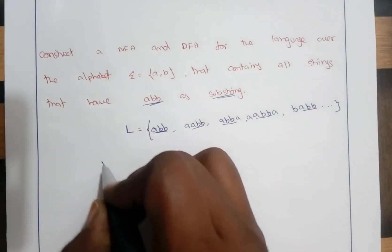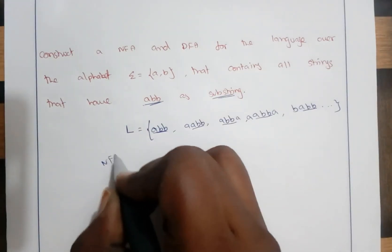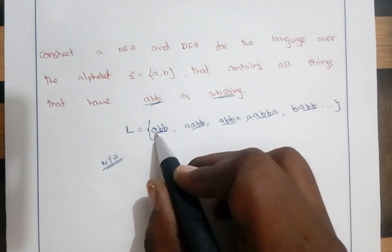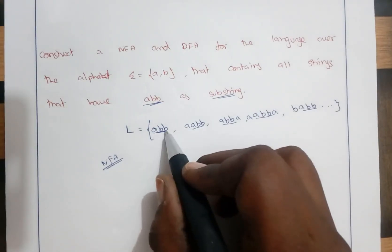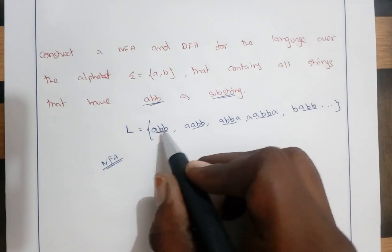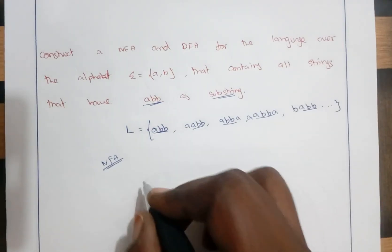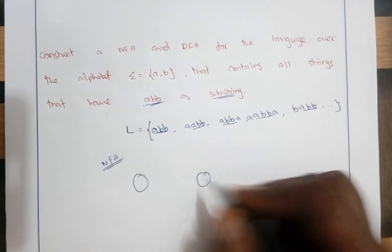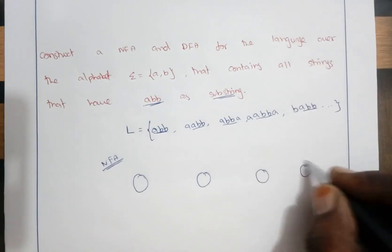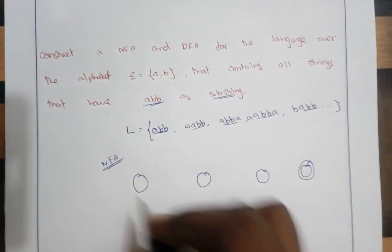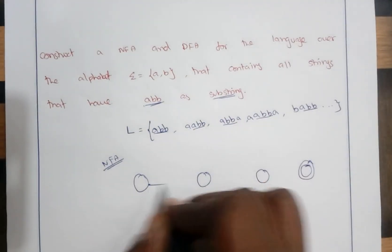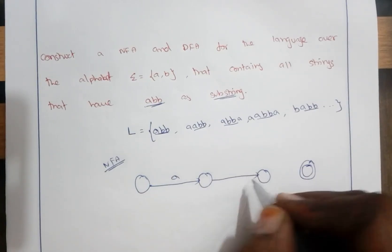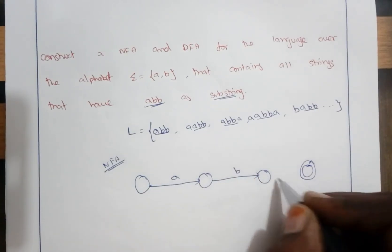Now, the construction of NFA is very simple. For example, we take the minimal input. The minimal input is ABB. For processing this ABB we need 4 states — 4 states as a whole — for the processing of A, B, and B.